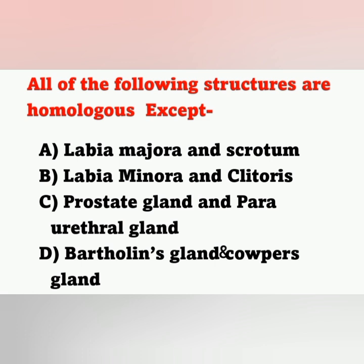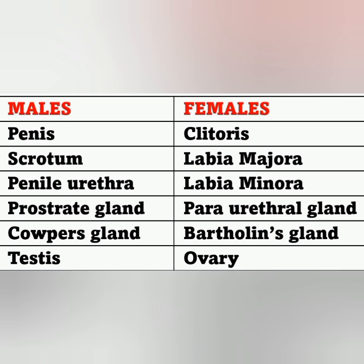Homologous organs are those organs in male and female that have the same embryological origin. In males, the penis is homologous to the clitoris in females. Scrotum in males is homologous to labia majora in females. Penile urethra is homologous to labia minora in females. Prostate gland is homologous to paraurethral gland in females. Cowper's gland is homologous to Bartholin's gland in females, and the testis is homologous to the ovary.